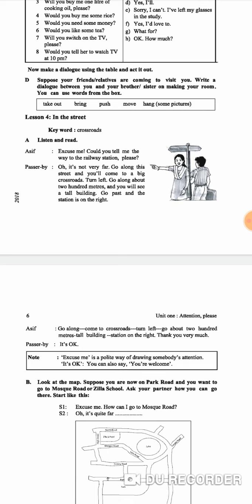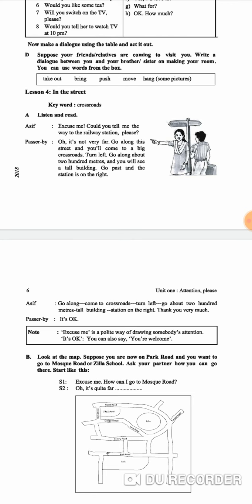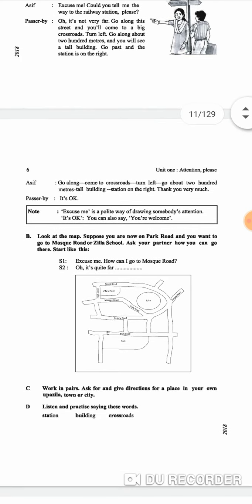Excuse me, can you please tell me the way to the railroad station? Passerby: It's not very far. Go along this street and you will come to a big crossroad. Turn left, go along about 200 meters and you will see a tall building. Go past and the station is on the right.